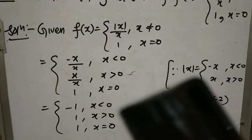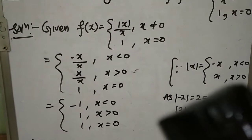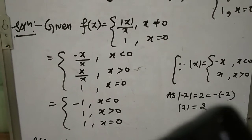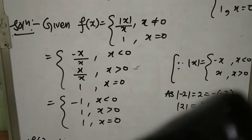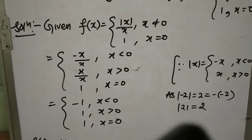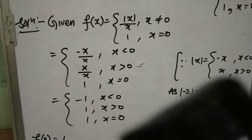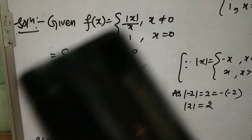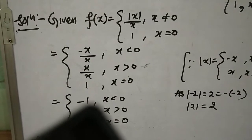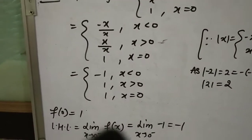Modulus function |x| को दो parts में break करते हैं: |x| = -x जब x < 0, और x जब x > 0। So: f(x) = -x/x = -1 when x < 0; x/x = 1 when x > 0; and 1 when x = 0। यही modulus का property है: negative value का mode positive बनाने के लिए extra negative sign लगाते हैं।